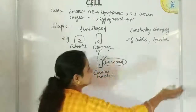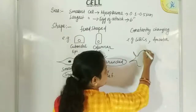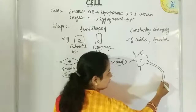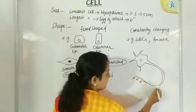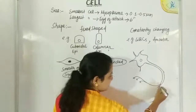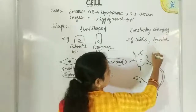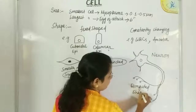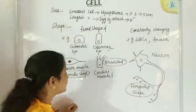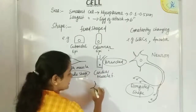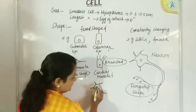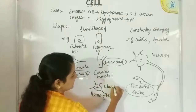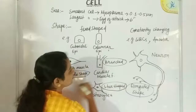Next, moving to elongated shape — this is the structure of a neuron. Neurons are the fundamental cells of the nervous system and have an elongated structure. There are also star-shaped cells in the nervous system, called astrocytes. So these are a few examples of different shapes of cells.